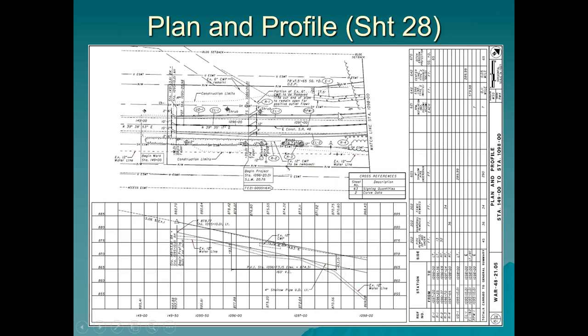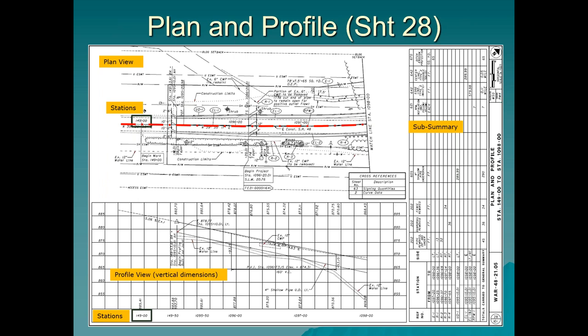Here is a plan and profile sheet. The format can vary, but in this case we have the plan view at the top half, the profile view showing vertical dimensions at the bottom half, and on the right is the sub-summary listing quantities for this sheet that are carried to the general summary. First thing to do: identify the center line of construction, highlighted in red. Then identify the stationing — the first station shown here is 1096+00.